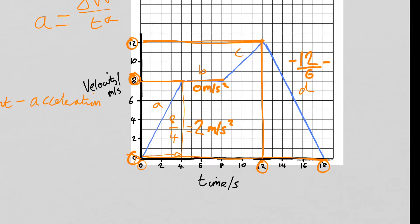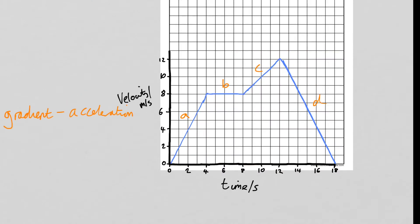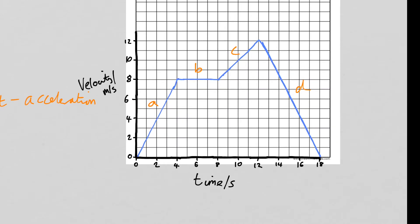Another thing we can work out from the graph is the area underneath the graph. If I shade the region underneath the graph, that area gives us the distance travelled by the object. This works because calculating an area means multiplying two side lengths — one from the y-axis which is velocity, and one from the x-axis which is time. Velocity times time gives you distance.